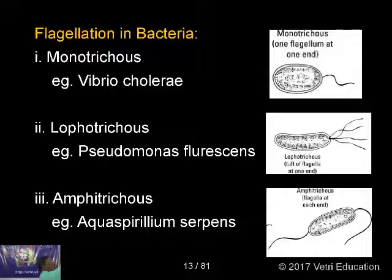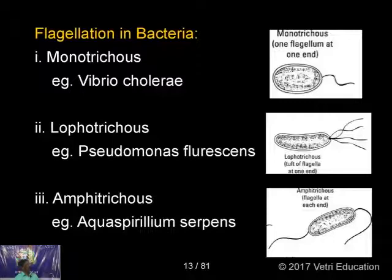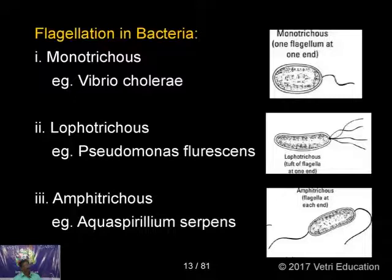Regarding flagella — flagella are long cylindrical bodies that help in locomotion, moving from one place to another. Based on their number and position, they are given different names. Trichus, also called trichome, means hair. Monotrichus means having one flagellum at one end — as seen in the first diagram, one flagellum at one end is called monotrichus.